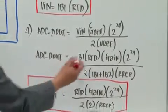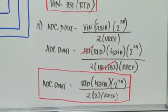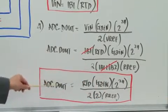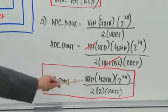What you can see here is that you can cancel IB1 and IB2 because they're essentially the same. And your output ADC code, your final equation will eliminate IB1 and IB2.